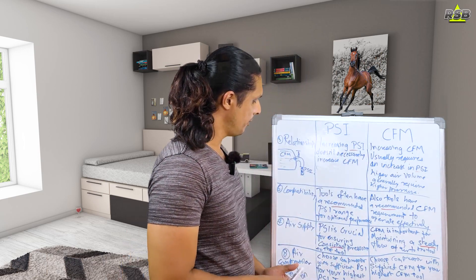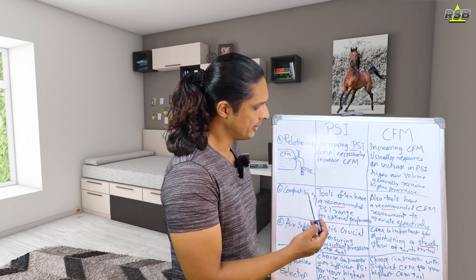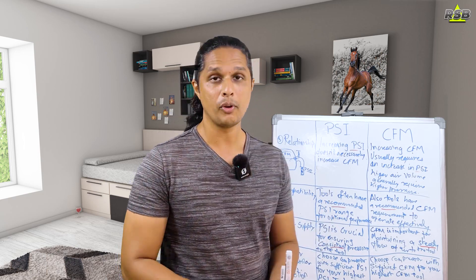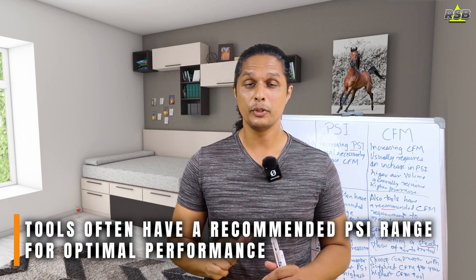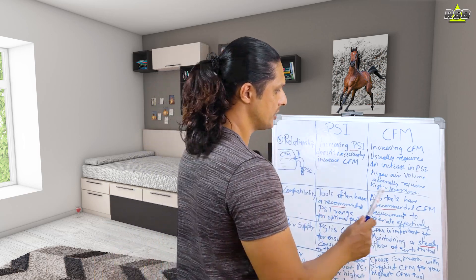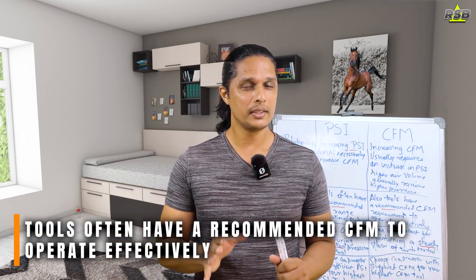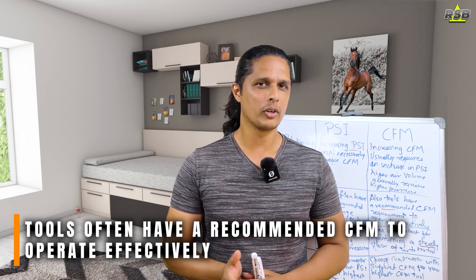The seventh point is compatibility. Tools often have a recommended PSI range for optimal performance. When you buy a new tool, the box will state how much PSI that tool needs — always check this. Similarly, a recommended CFM requirement to operate that tool effectively will also be written on the box. So when it comes to compatibility, check both PSI and CFM requirements.